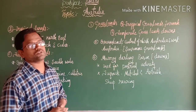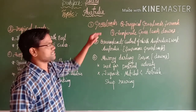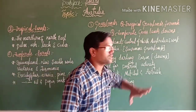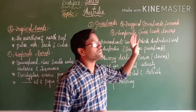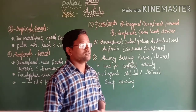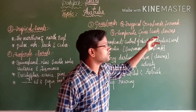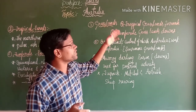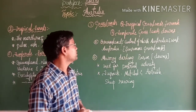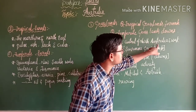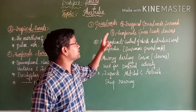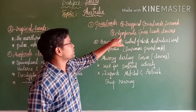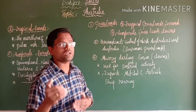The third natural vegetation is grassland, divided into two parts: tropical grassland, also called savannah grassland, and temperate grassland, also called downs. Tropical grassland is found in Queensland, central and northern Australia, and western Australia. Temperate grassland is found in the Murray-Darling basin and is used for pastoral activities.